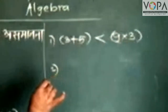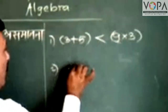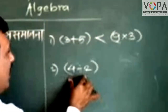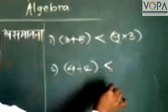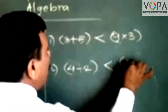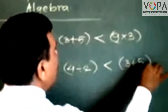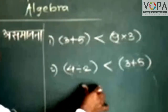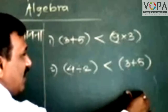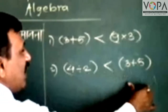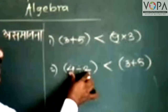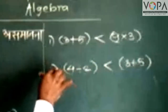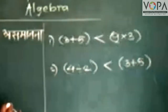Now we take another example. 4 divided by 2 — the answer is 2, and 3 plus 5 is 8. So 2 is less than 8. Hence, 4 divided by 2 is less than 3 plus 5. We can also represent the inequality in other ways.